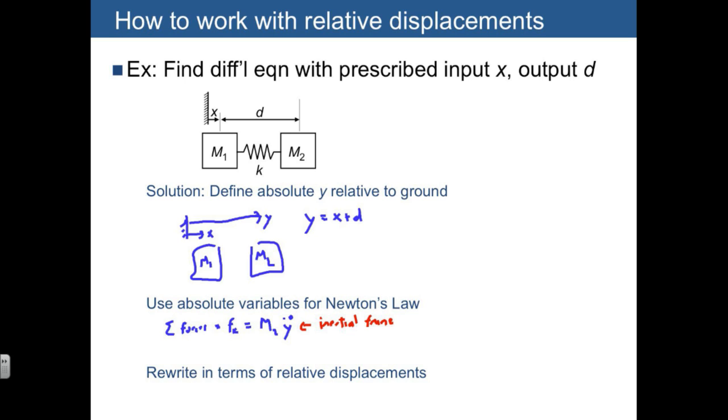I won't show the details of fk, except just to note that we have m2 y double dot is equal to k times x minus y, which gives us our equations of motion, except this is in terms of absolute variables. So we have absolute displacements. Now, of course, what we were asked for was to find a differential equation with output d.